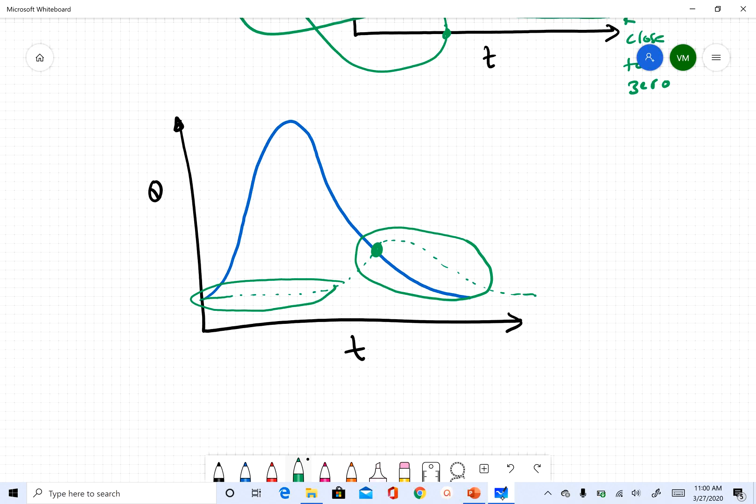HEC-HMS has an option to specify the inflection point on the falling recession limb. I'm not going to tell you which parameter does that, but HEC-HMS does have an option for you to specify this point.